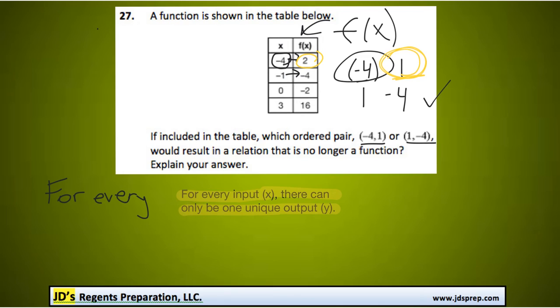So 1, negative 4 would be totally fine, but negative 4 and 1 is not. So negative 4, 1.